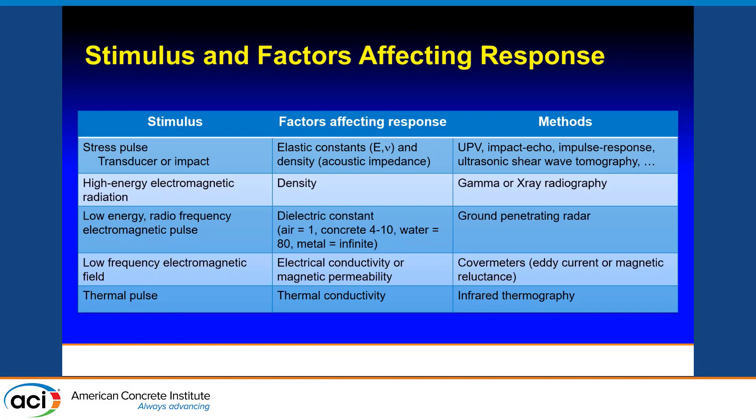High-energy electromagnetic radiation — gamma and x-radiography — is affected by the density of the material. It's rarely used, but sometimes it's the only way to see inside concrete when looking for very fine detail. Low-energy radiofrequency electromagnetic pulses are affected by the dielectric constant: air is 1, concrete (depending on moisture content) is between 4 and 10, water is about 80, and metal has an infinite dielectric constant because it's a conductor. Ground-penetrating radar, or GPR, utilizes this principle.